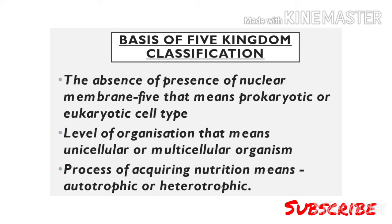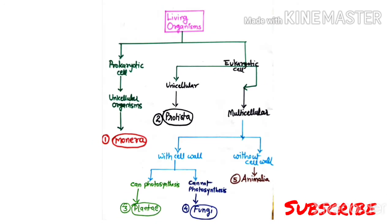So, for five kingdom classification, on the basis of this flow chart: if an organism has a prokaryotic cell, it will definitely be unicellular. So the first kingdom you get is Monera — Monera contains only unicellular prokaryotic type organisms.